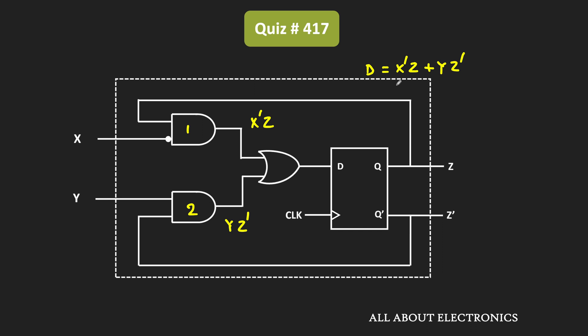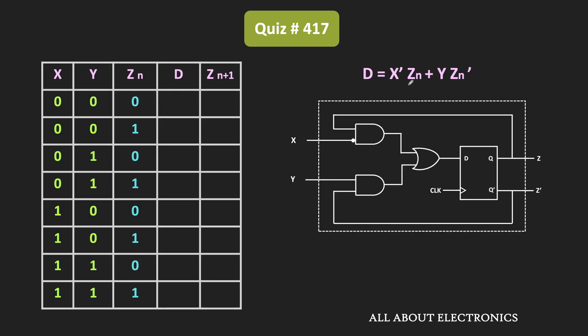We got the expression of D in terms of X, Y, and Z. Now let us find out for which input combinations of X, Y, and Z this D input is equal to 1. The D input is equal to 1 when either X is 0 and Zn is equal to 1, where Zn represents the present state of the output.